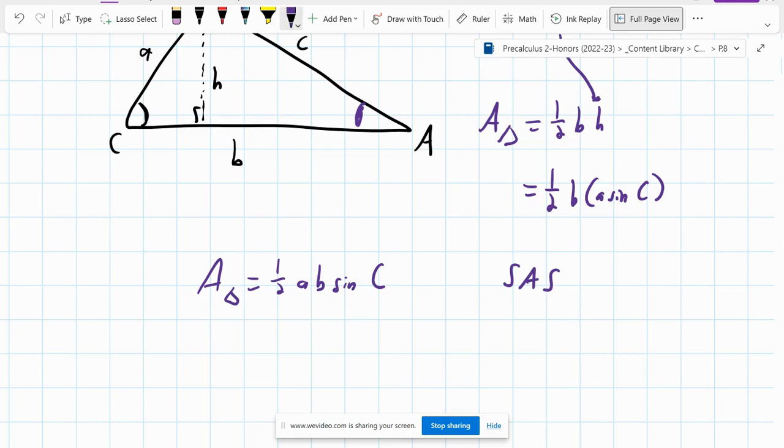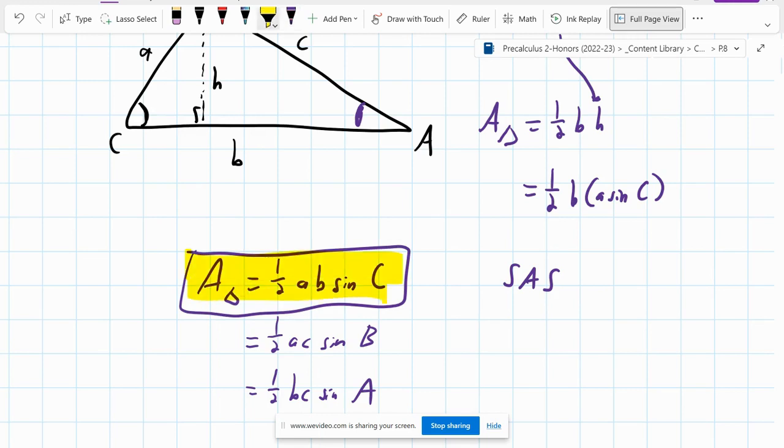side length b, and the angle between them. You could write this in three other versions, one half a c sine of angle b, or one half bc sine of angle a. But this first one's the only one I really remember and use.